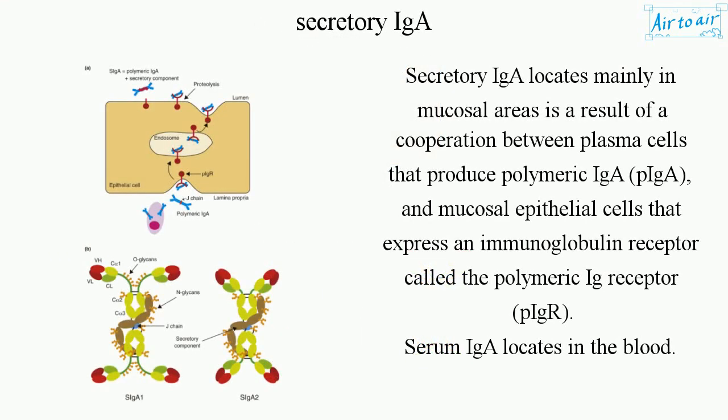Secretory IgA locates mainly in mucosal areas as a result of a cooperation between plasma cells that produce polymeric IgA and mucosal epithelial cells that express an immunoglobulin receptor called the polymeric Ig receptor. Serum IgA locates in the blood.